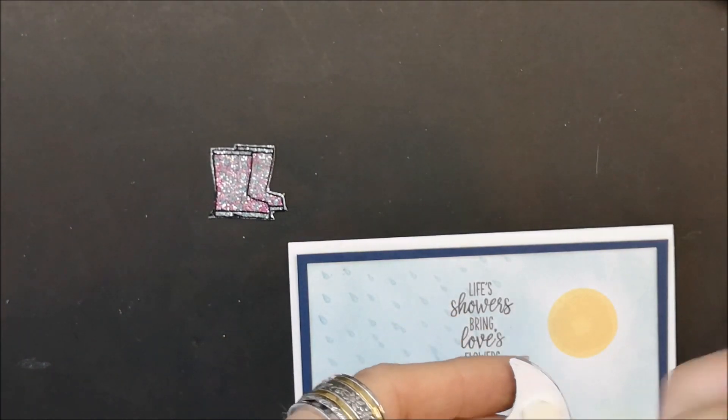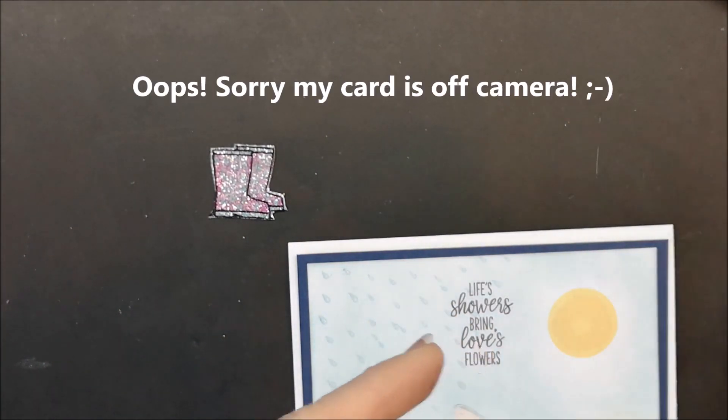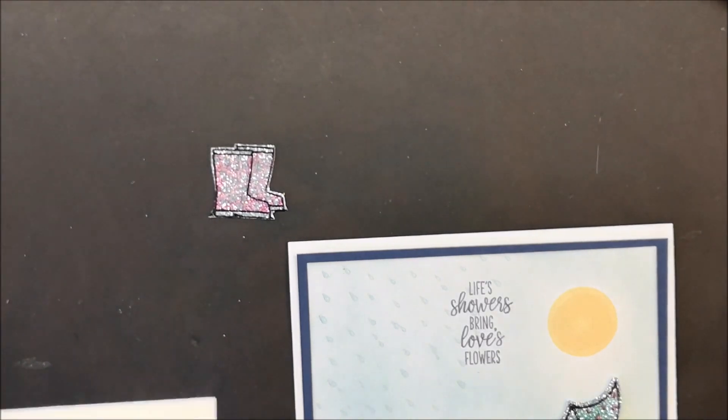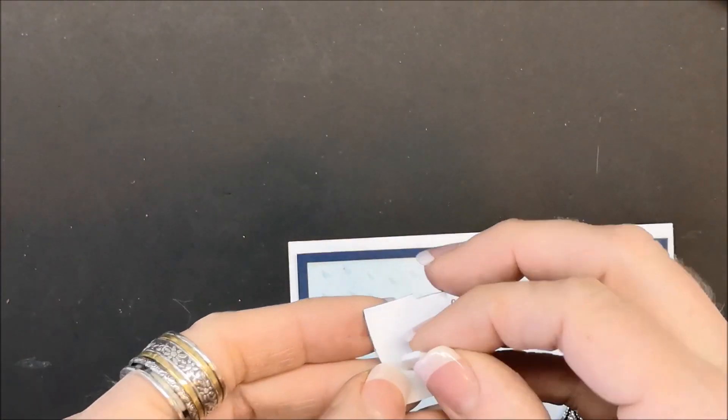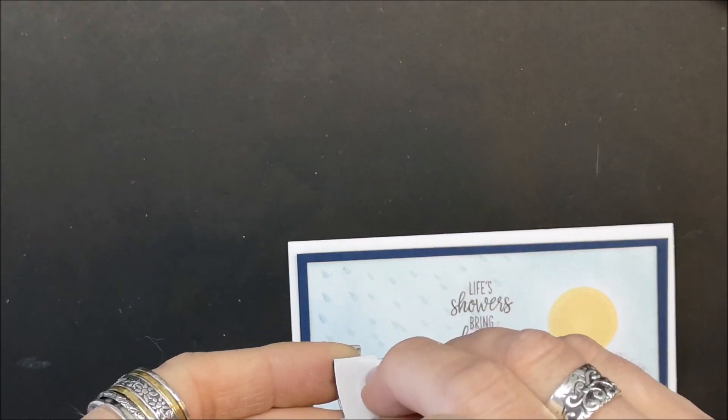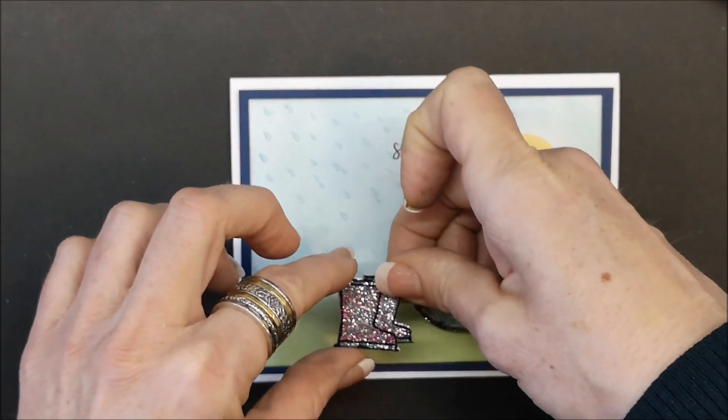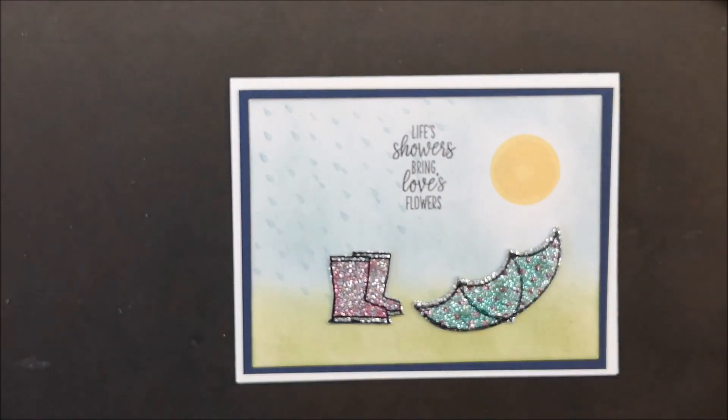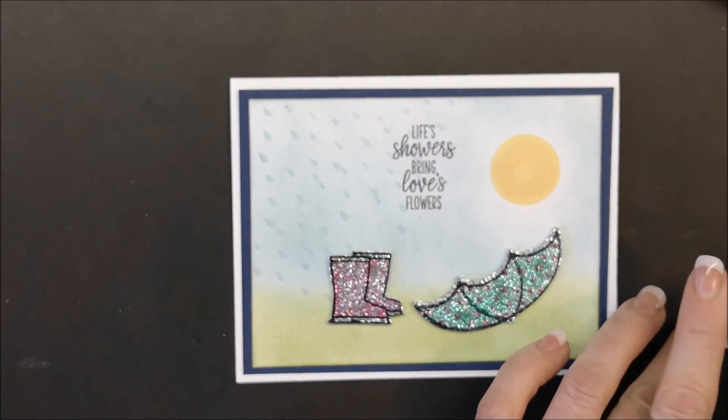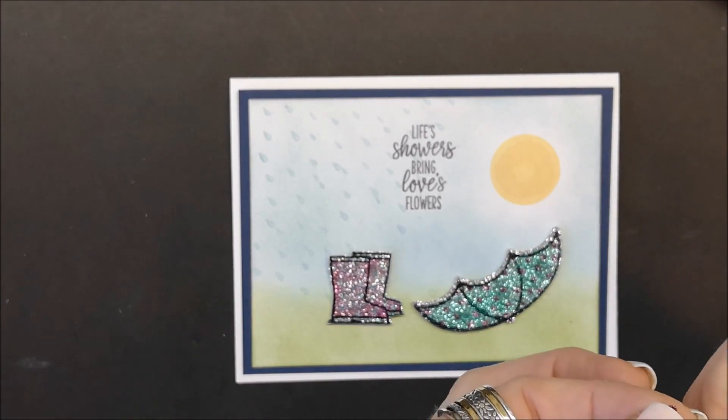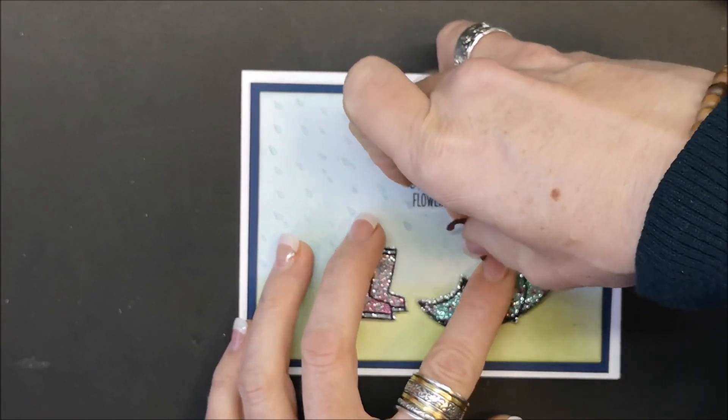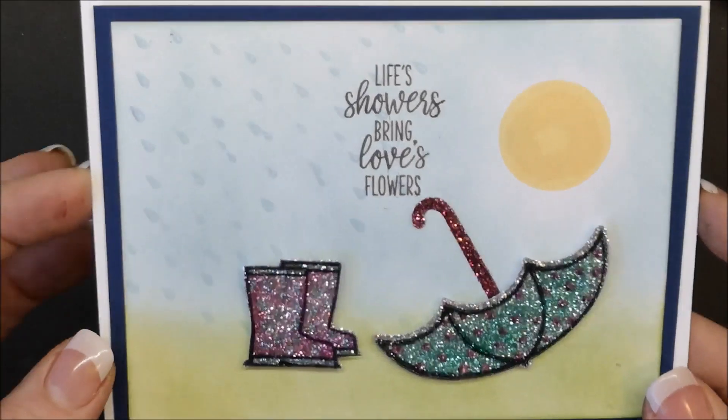I'm going to put the umbrella on first with a couple stamping dimensionals and I'm just going to position that like so. Then dimensional behind the boots and put the boots right there. Then I'm going to take the handle of the umbrella, put a little snail behind it, and that just gets tucked right beneath it. And there's the finished card.